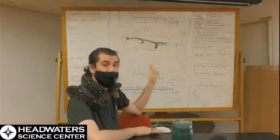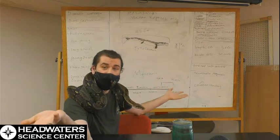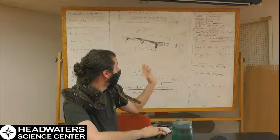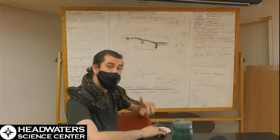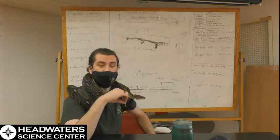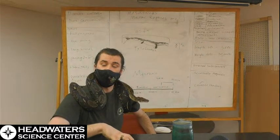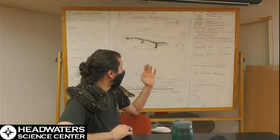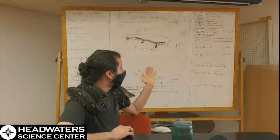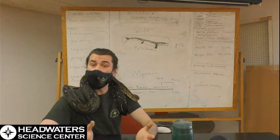They are in the kingdom Animalia, the phylum Chordata - pretty much most of the animals I cover are in that general group. They're in the class Reptilia, and this is where it's going to get familiar. They are in the order Squamata, which is the same group of reptiles as modern lizards and snakes. They are in the clade Pythonomorpha, I believe, and the superfamily is Mosasauria.